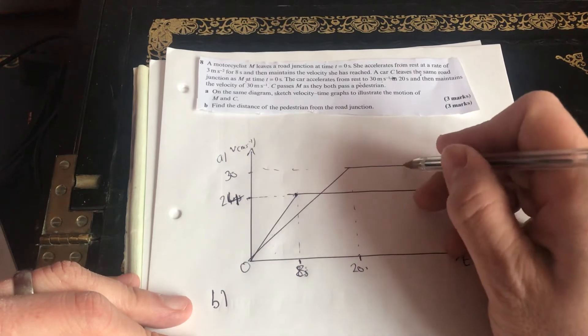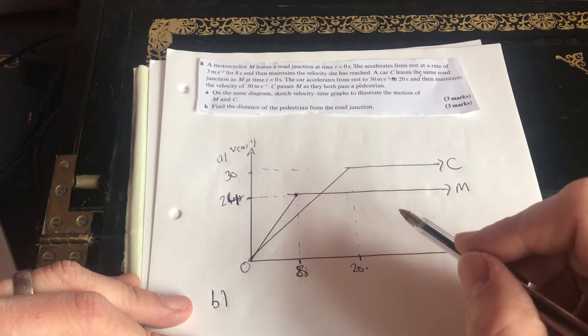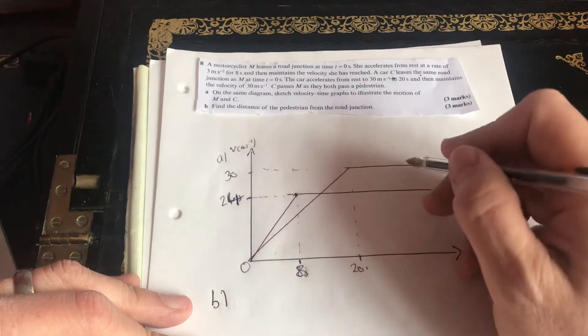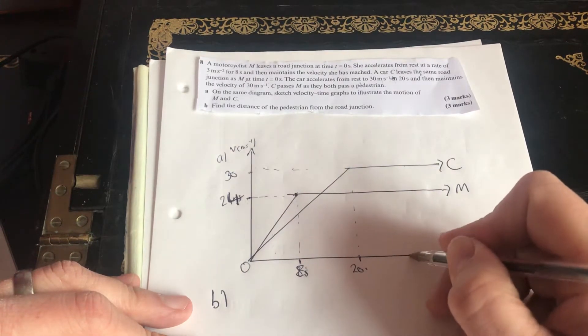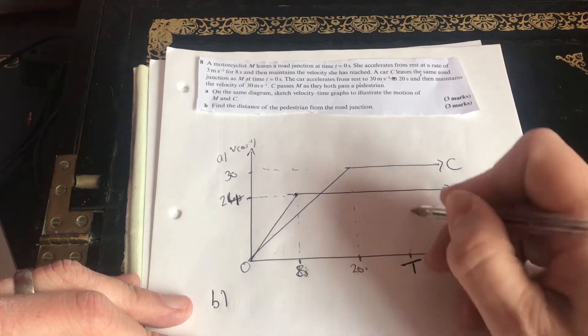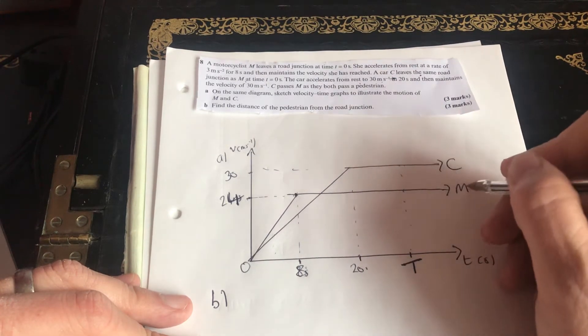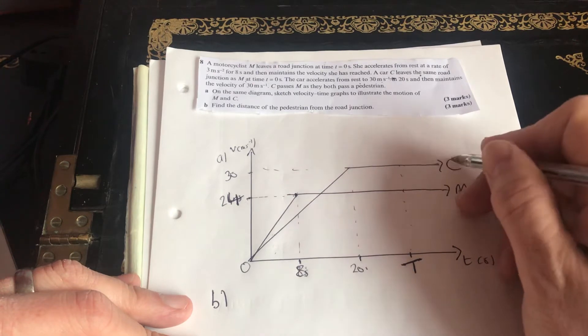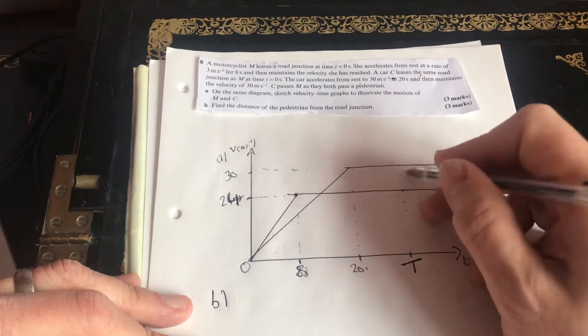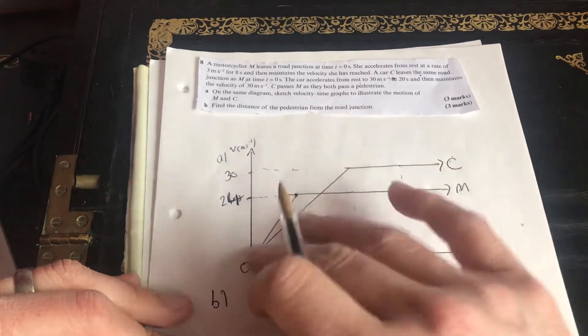So we need an expression for this distance. So we know that it's going to be somewhere over here. And we're going to call it Big T. I'm going to say at Big T, the motorcyclist and the car, they cross. They meet. So at some time, their area is going to be the same.